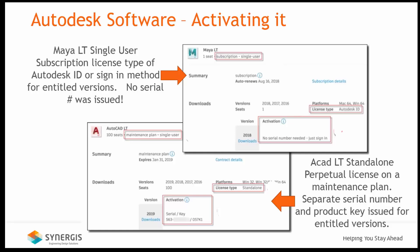For example, if I access my Autodesk account and expand my Maya LT products, I can see it states it's a single user subscription and the license type is Autodesk ID — as you can see in the image, there was no serial number assigned to this given product. This means I would select the sign-in method on the 'Let's Get Started' dialog. For the AutoCAD LT product, it is based on a perpetual license on a maintenance plan; the license type is standalone and its serial number and product key was issued for the activation. I would select the serial number and product key method in the 'Let's Get Started' dialog.